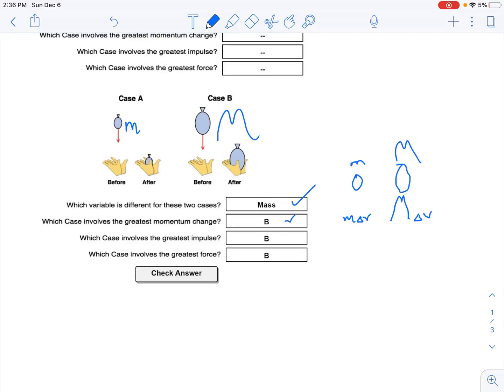If B has the larger change in momentum, that will also have a larger impulse. And in fact, in order to have a larger impulse, if the impact time is the same for both, then B has the larger impact force because it has the larger overall impulse and the larger change in momentum.